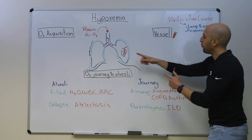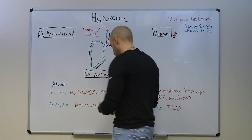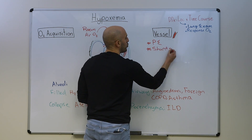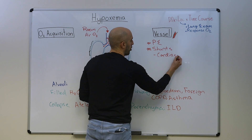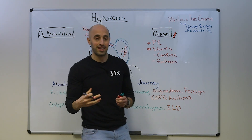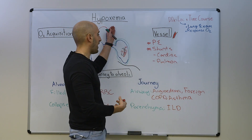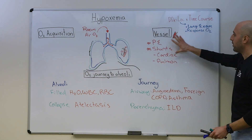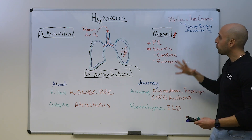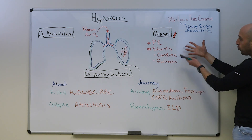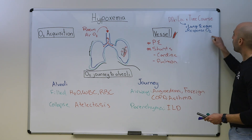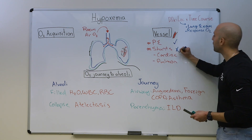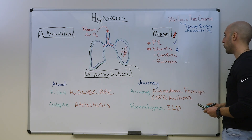Now let's make our way from the alveoli to the vessel. What can happen at the vessel that can lead to hypoxemia? A patient can have a pulmonary embolism or a shunt. Shunts come in two flavors: cardiac shunts and pulmonary shunts. When someone has a shunt, they have mixing of deoxygenated blood with oxygenated blood leading to hypoxemia. What will the lung exam be in someone with a PE or shunt? It'll be normal. So if someone has a normal lung exam in hypoxemia, you have to consider a vascular problem like a PE or a shunt. Patients with pulmonary embolism will respond to oxygen therapy, but if you have a shunt, you won't get much of a response to supplemental oxygen, because that deoxygenated blood keeps mixing with the oxygenated blood.